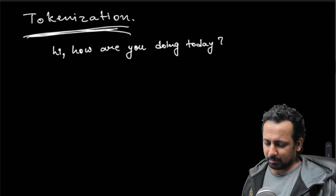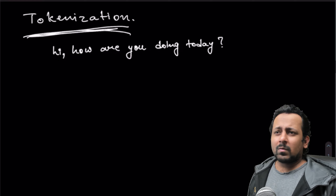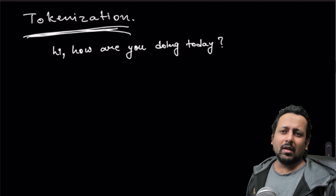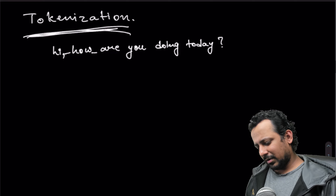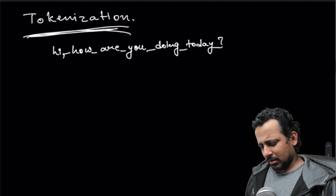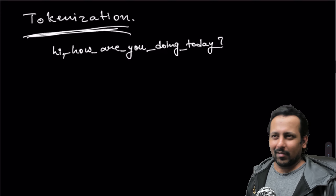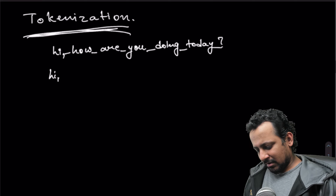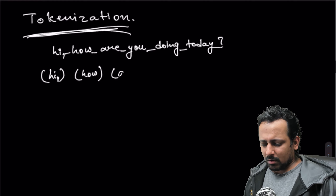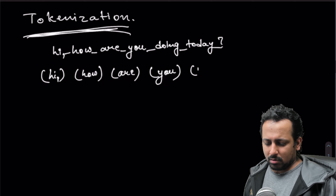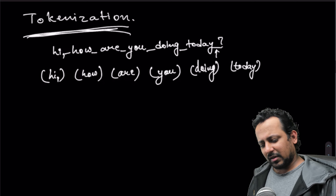So what happens in tokenization: you have an input sentence, let's say 'Hi, how are you doing today?' with a question mark. A very simple way to tokenize any sentence would be to divide by spaces. So we see there is one space here, one space here, and so on. If you just divide by spaces, you get: 'Hi,' as one token, then 'how', 'are', 'you', 'doing', 'today', and the question mark becomes a new token.